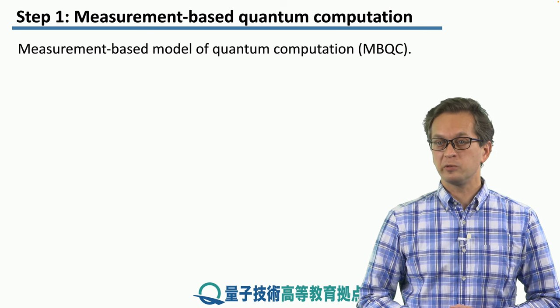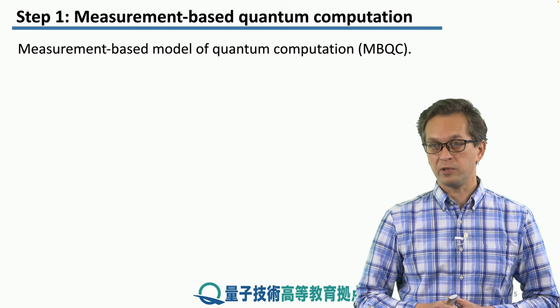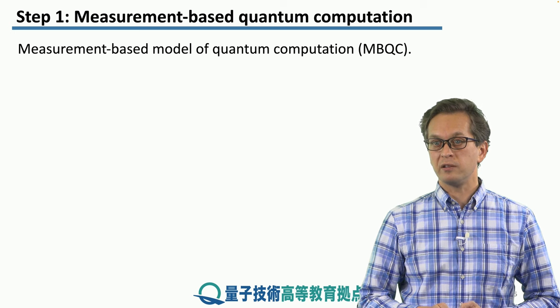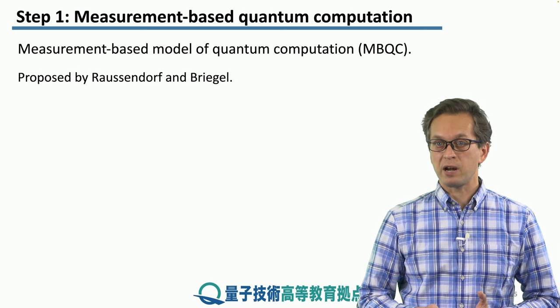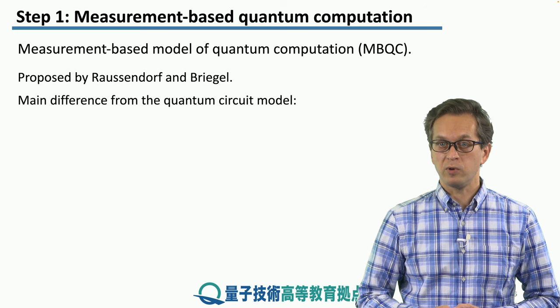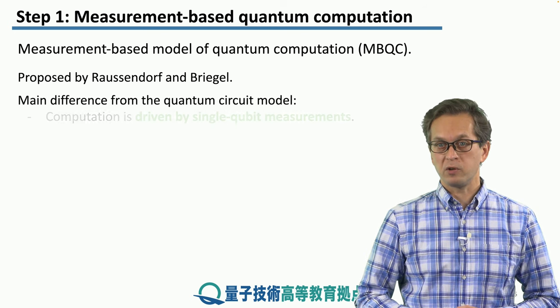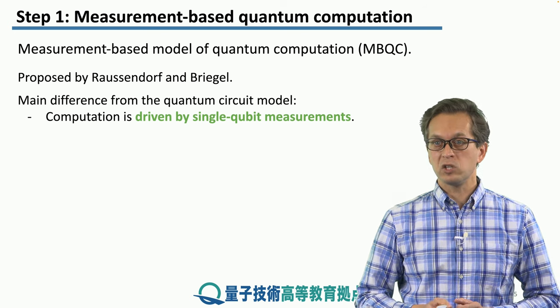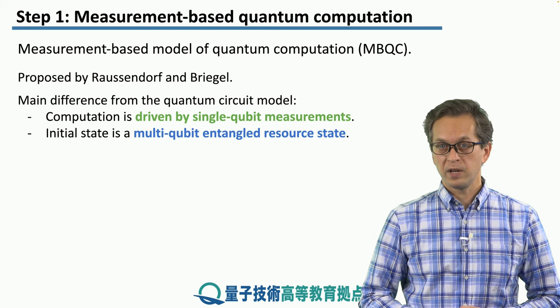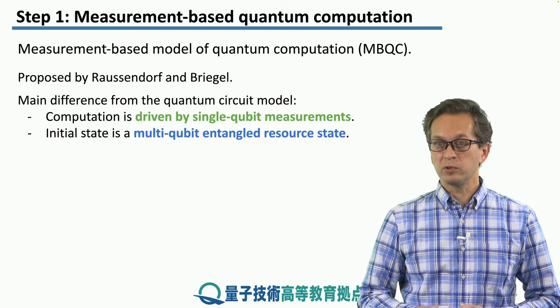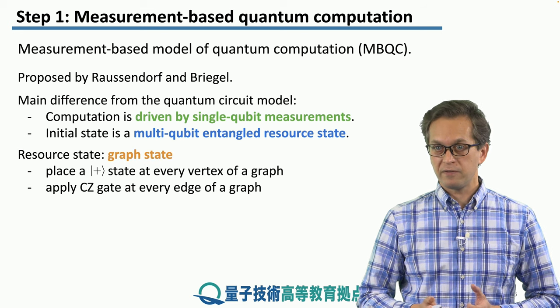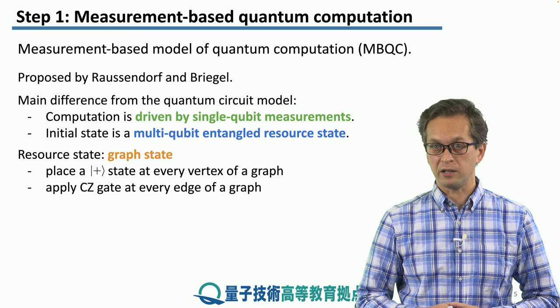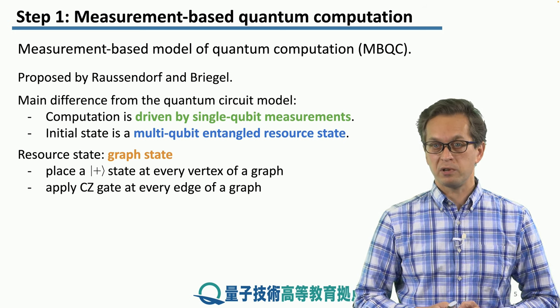Measurement-based model of quantum computation is radically different from the circuit model. Sometimes measurement-based quantum computation is also abbreviated to MBQC. It was proposed by Raussendorf and Briegel. Now the computation is not driven by unitary, but it's driven by single-qubit measurements. And the initial state is not separable, but it's a multi-qubit entangled resource state. In fact, we've encountered these resource states already when we were talking about repeater graph state link architecture. The resource state for MBQC is also a graph state.